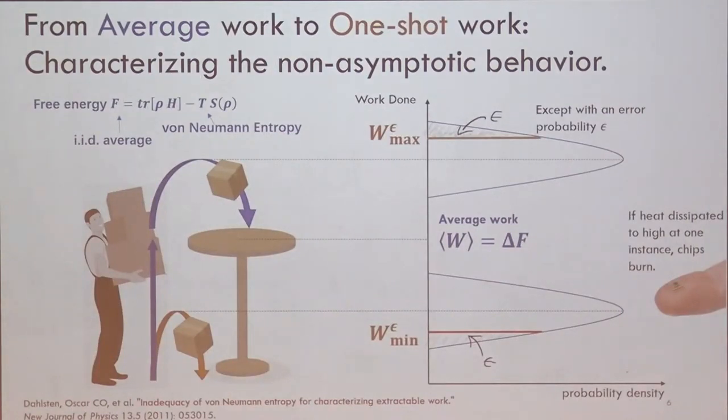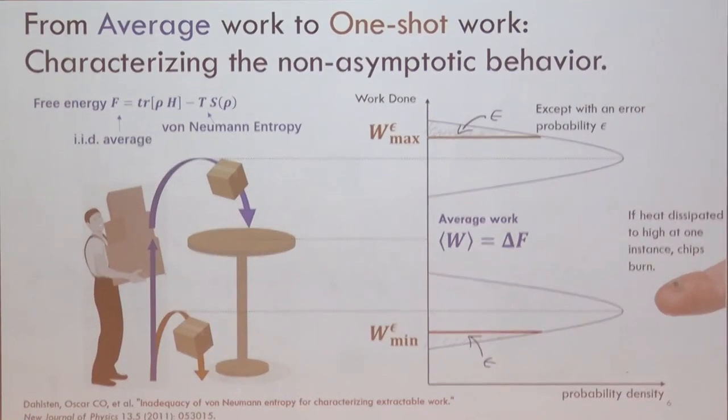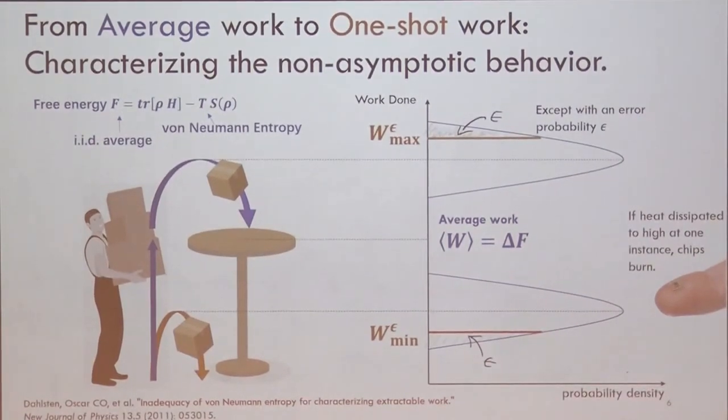In 2011, Oscar, Dustin, and others pointed out that it's inadequate to use adjustable von Neumann entropy to characterize extractable work. This actually induced a massive shift to use non-asymptotic entropy, such as min-max entropy, to study thermodynamics. The idea is quite neat, and I'll just explain to you. Consider you have a worker, and his job is to lift the box from the ground to the table. But half of the time, the worker just threw the box too high, and half of the time, the worker just drops the box too low. But on average, you will see that they coincide with the requirement. But definitely, this is not something we want the worker to do. So how should we characterize his performance?